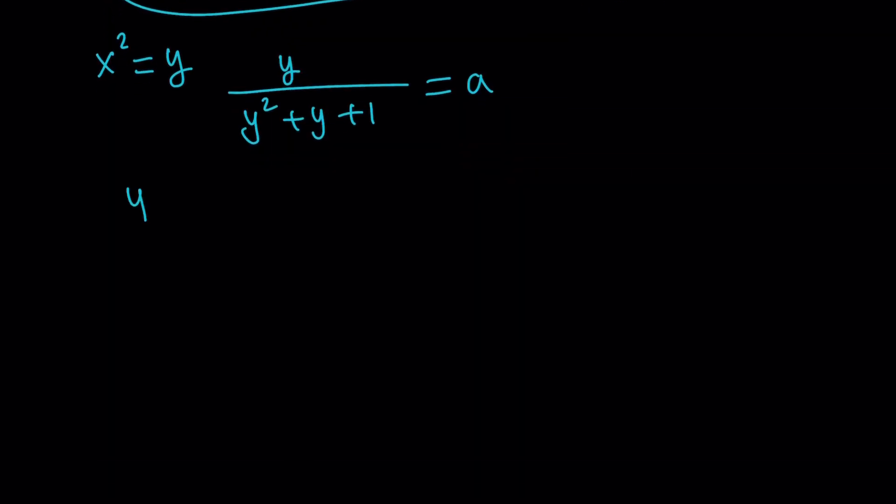Then we get y divided by y squared plus y plus one equals a. Let's go ahead and cross multiply. ay squared plus ay plus a equals y. I'm going to bring this y over here. Notice that my equation is going to be quadratic in y. It's going to be a minus one, the coefficient of y here, plus a is going to be my constant. This is quadratic in y. And we can definitely solve this using the quadratic formula, can't we?